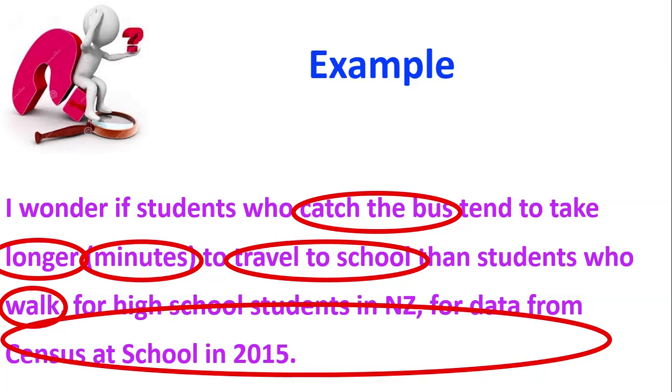And then I also have my population here. It's got high school students in New Zealand for data from Census at School in 2015. So I've defined that population. And there is my magic word, tend. So we need to have that. So this has got all of those different components in it that we need to have. And when you write your investigation questions, these are the things you need to think about. Thank you.